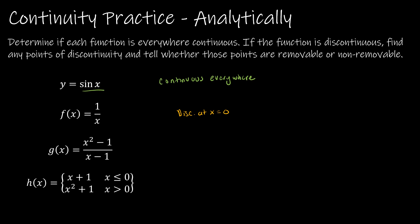The question asks: if the function is discontinuous, tell whether those points are removable or non-removable. It's discontinuous at x equals 0. Is it removable? We talked about the fact that if you had an asymptote, or a gap or jump, that it's not removable. So we're going to look analytically at the limit as x approaches 0 from the left of our function, and the limit as x approaches 0 from the right of our function, and once we know that, we'll see if this is removable or not.